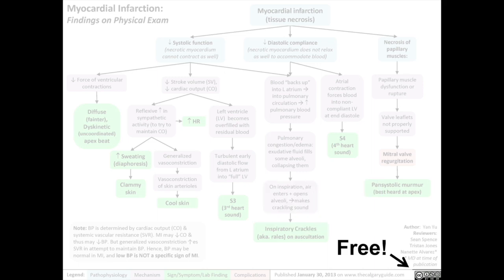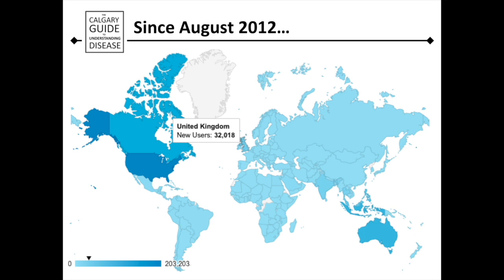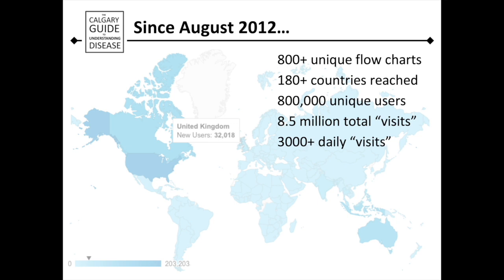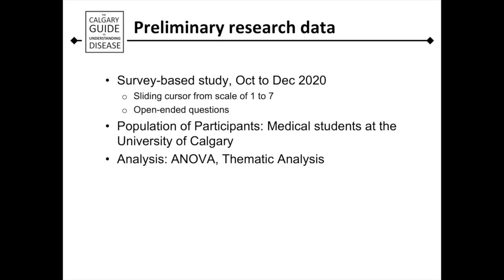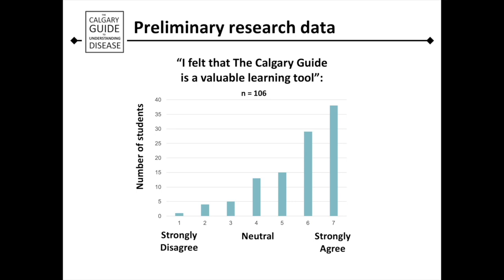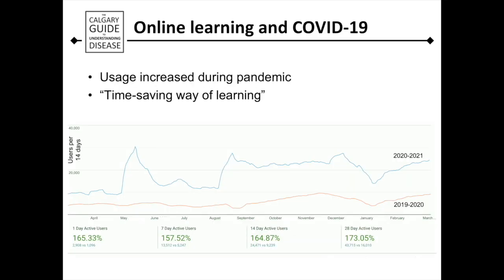Our content is free. Since August of 2012, our content has been used in over 180 countries, serving almost a million unique users, with 8.5 million total visits and over 3,000 daily visits. We now have developed over 800 unique flowcharts, one corresponding to each medical topic. We've also been reviewing their benefit on medical learners, namely medical students at the University of Calgary. In one recent survey, we found that the Calgary Guide is a valuable learning tool to the great majority of students. Based on our Google Analytics data, during COVID-19 especially, the Calgary Guide was used way more frequently, and many people described it as a time-saving and very useful way of learning.